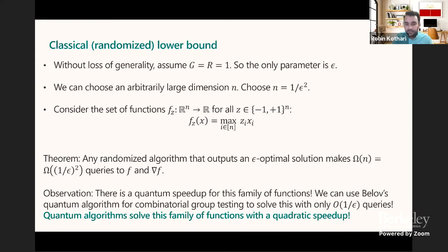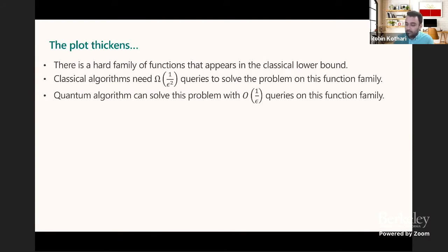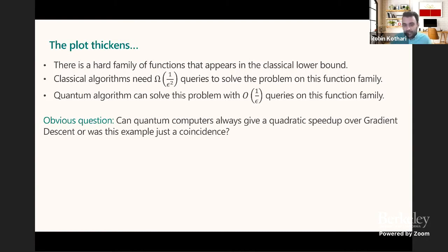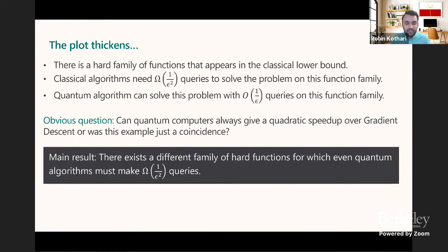So quantum algorithms can solve this family of functions with a quadratic speedup. Here's the recap: there is a hard family of functions appearing in the classical lower bound requiring 1/epsilon squared queries, but quantum algorithms solve it faster with a quadratic speedup. The obvious question: can you always get a quadratic speedup for first-order black-box convex optimization? Or was this just a coincidence? The main contribution of this work is showing there exists a different family of hard functions for which even quantum algorithms must make 1/epsilon squared queries — so there's no quantum speedup in this setting over gradient descent.